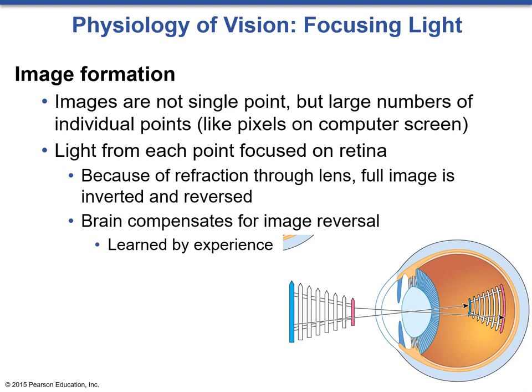When actually forming the image, the image itself is not just a single point — it is actually a large number of individual points. We see things very much the same way a computer screen works with pixels. Light from each point is focused on the retina, and because of refraction through the lens, the full image is inverted and reversed. The brain compensates for this image reversal through experience, so we are actually receiving an inverted and reversed image on the back of our eye, and our brain corrects it immediately, allowing us to see everything upright.